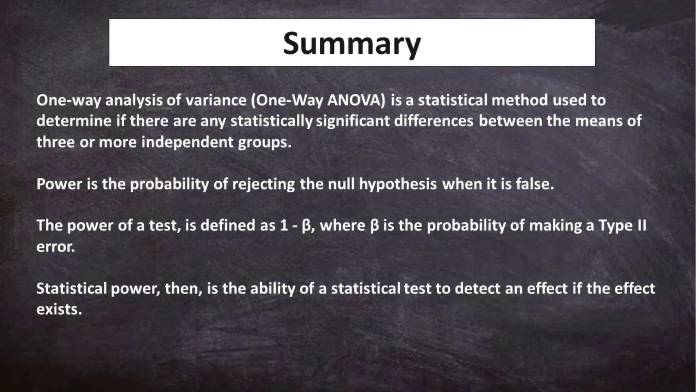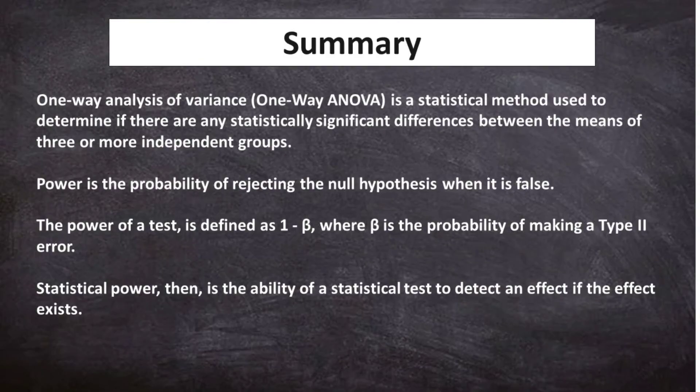One-way analysis of variance, or one-way ANOVA, is a statistical method used to determine if there are any statistically significant differences between the means of three or more independent groups. Power is the probability of rejecting the null hypothesis when it is false. The power of a test is defined as 1 minus beta, where beta is the probability of making a Type II error. Statistical power is the ability of a statistical test to detect an effect if the effect exists.